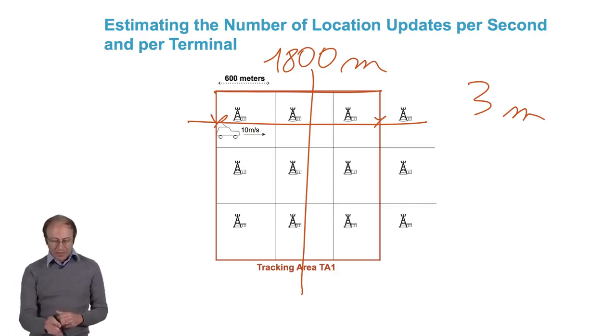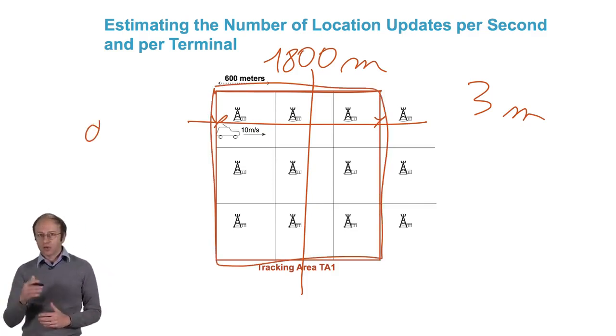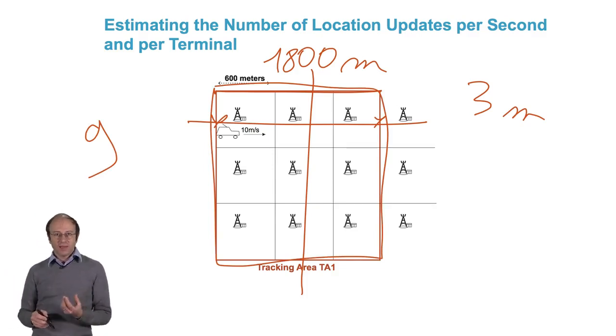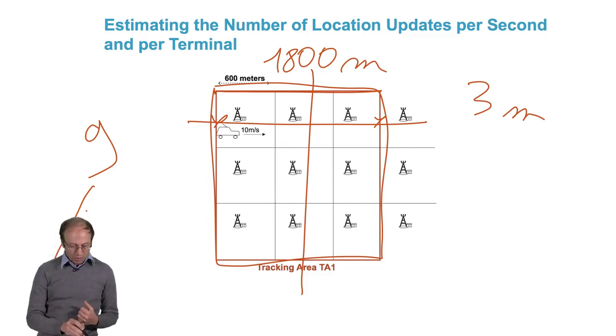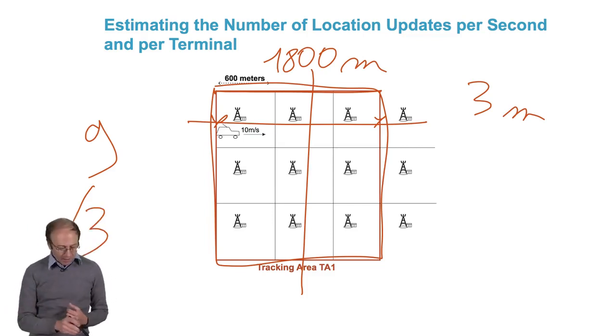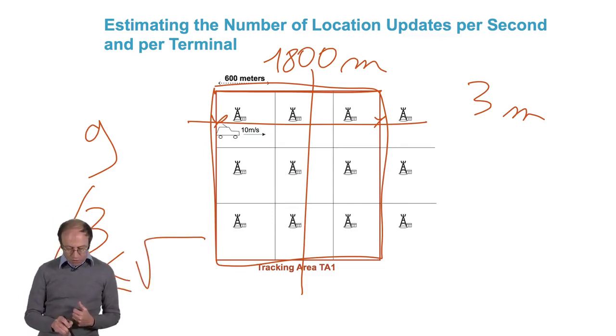We have nine cells in the tracking area. And we've divided the average number of location updates that we do by three, which is the square root of nine.